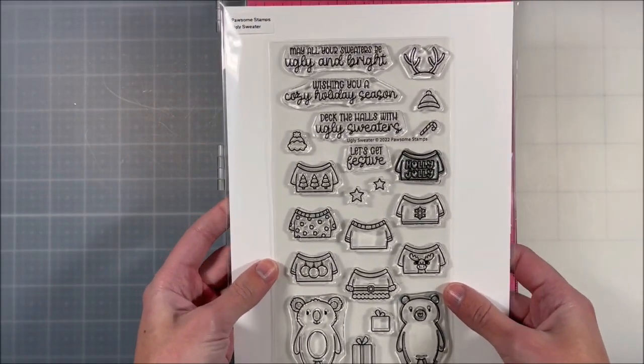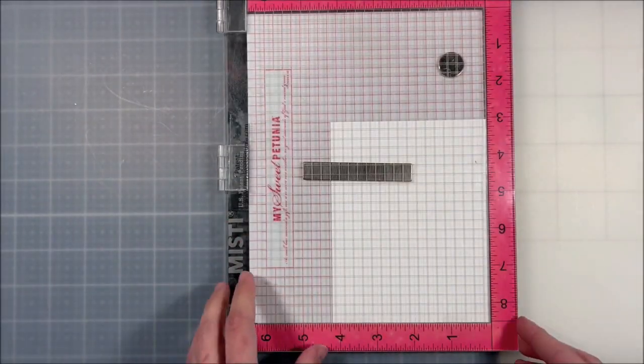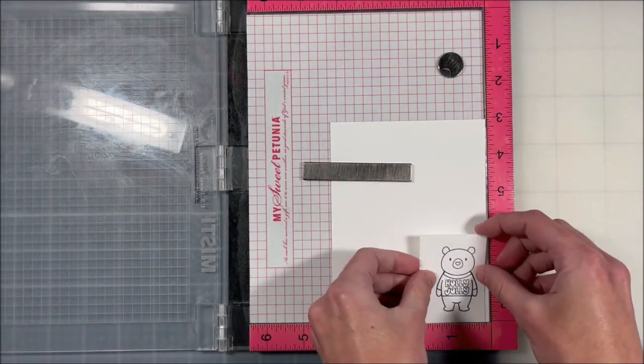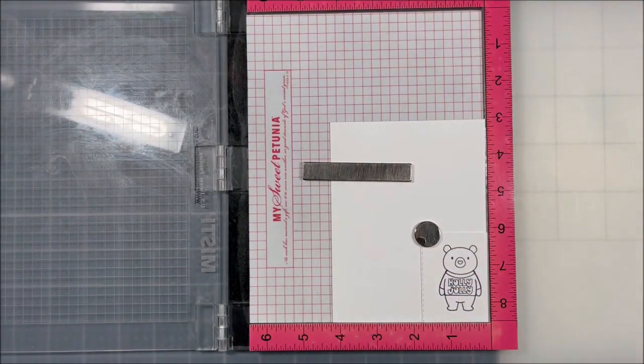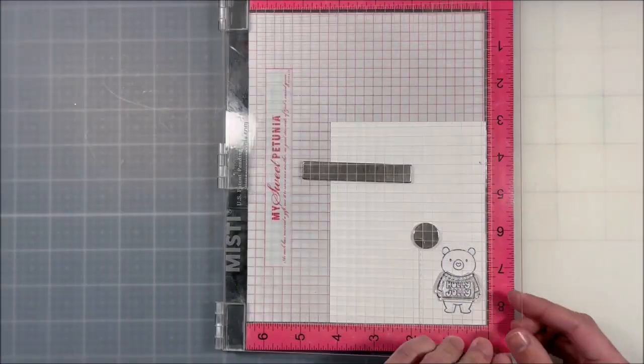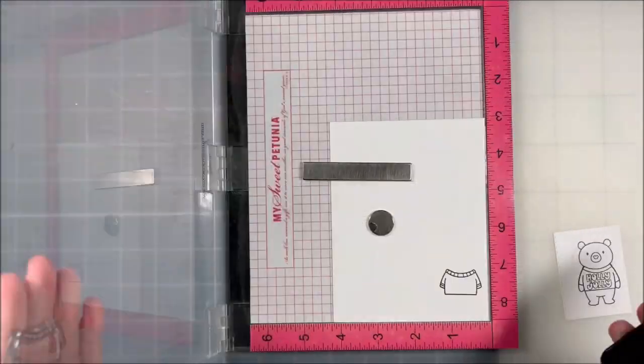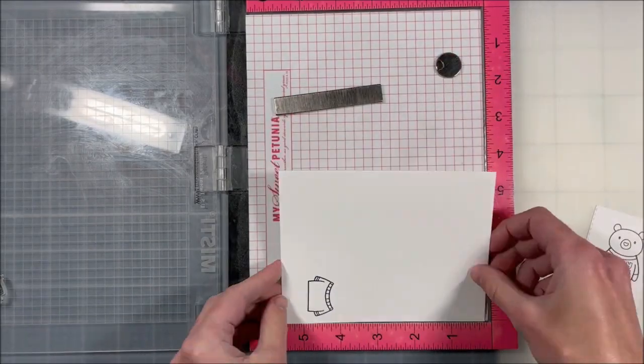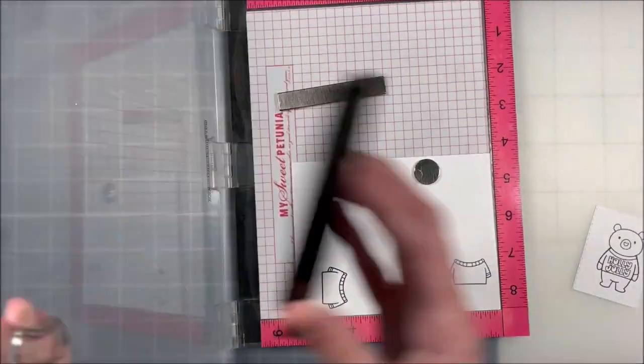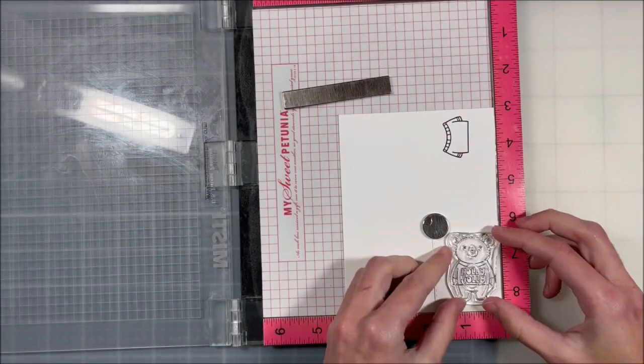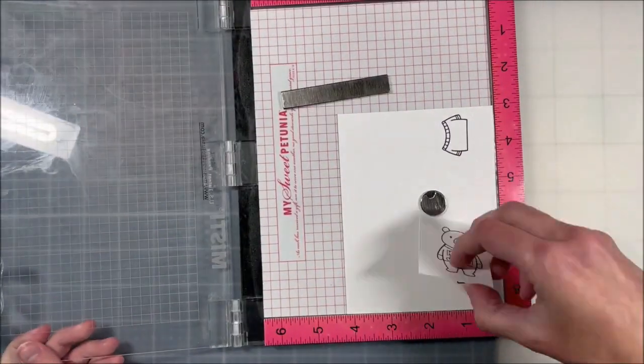Then I'm going to move on to my stamping and I have this adorable new stamp set. This is the Ugly Sweater Stamp Set and I created myself a little template that has the shirt and the bear. I just find this to be a lot easier when I'm lining up all of the different shirts and the different bear or koala from the stamp set, so I don't have to do any hard work when it comes to lining things up and masking them off.